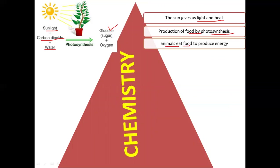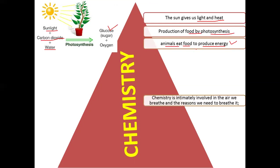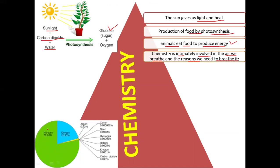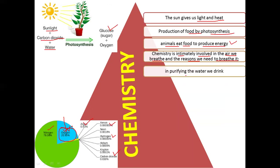Animals — and we are also included in animals — eat food and produce energy for their daily activities. This production of energy from food takes place in the body through a series of chemical reactions by which food is slowly converted to energy required for activities, like moving a finger. Chemistry is also intimately involved in the air we breathe. Air is a mixture of nitrogen, oxygen, argon, xenon, hydrogen, and carbon dioxide, and the oxygen we require for respiration is a chemical element.